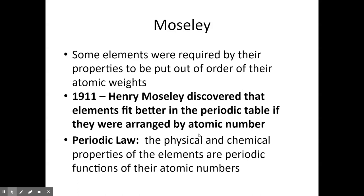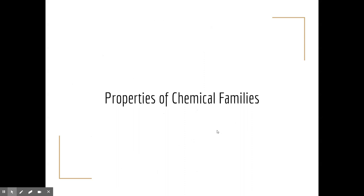They didn't have the technology to determine atomic number until the early 1900s. Even so, it is Mendeleev who is credited with periodic law, which states that the physical and chemical properties of elements are functions of their atomic number and occur in a repeating periodic fashion.